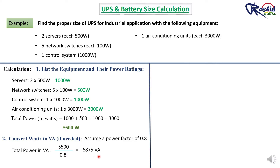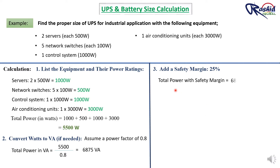Now we need to add a safety margin — typically 25% or 30%; here I use 25%. Total power with safety margin equals 6875 multiplied by 1.25, which gives us 8593 VA.